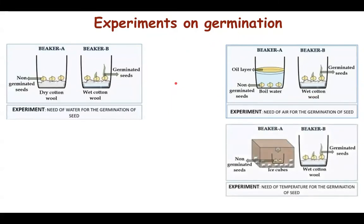The third experiment shows that a suitable temperature is needed. Place soaked seeds in two beakers on moist cotton wool. One beaker is kept in ice cubes and the other is left at room temperature. The seeds in ice cubes fail to germinate despite having air and water, because suitable temperature is absent. The seeds kept at room temperature get all three conditions and germinate successfully.